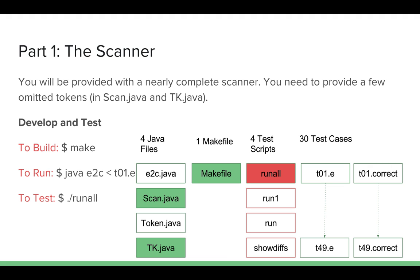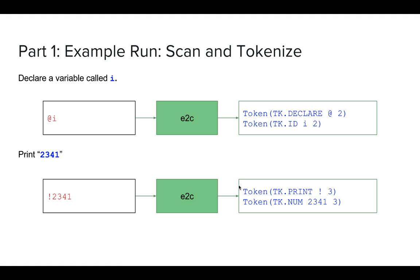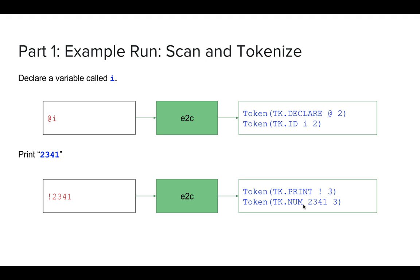Let me show you what a sample run for part one looks like. I'm going to run the program e2c and give it the input '@i', which is declaring a variable called i, and I should expect to get a sequence of tokens. The '@' in the E language means declare, and 'i' is an identifier, so tk.id and the letter i. In the second example, I want to print 2341 — the exclamation mark is the command to print. I pass it to e2c and I get a sequence of tokens: tk.print with the exclamation mark symbol, and tk.num for the number.